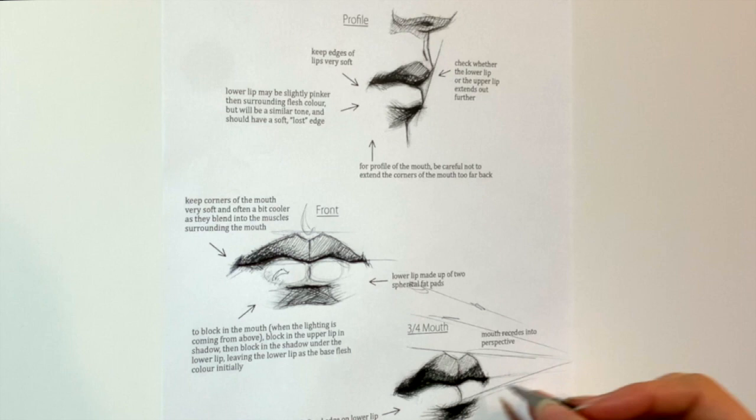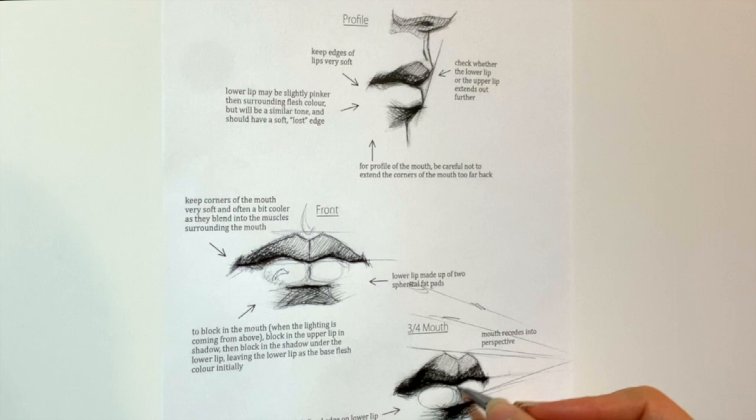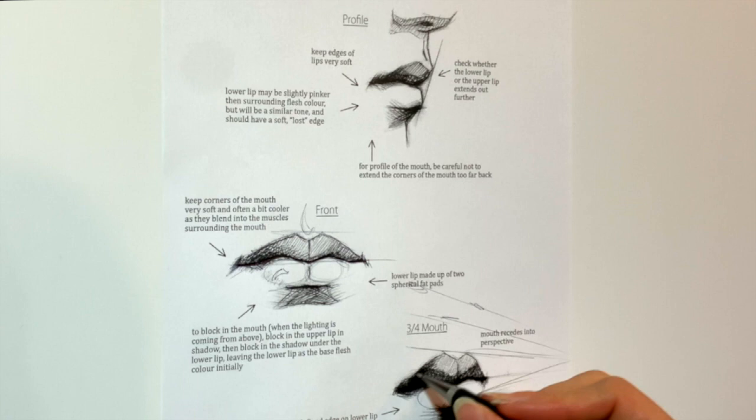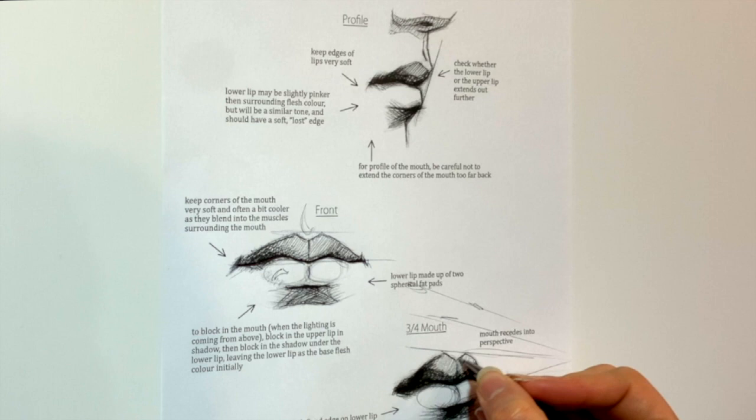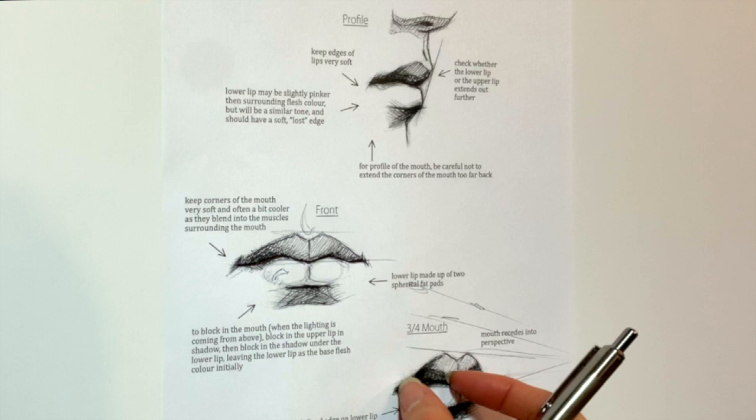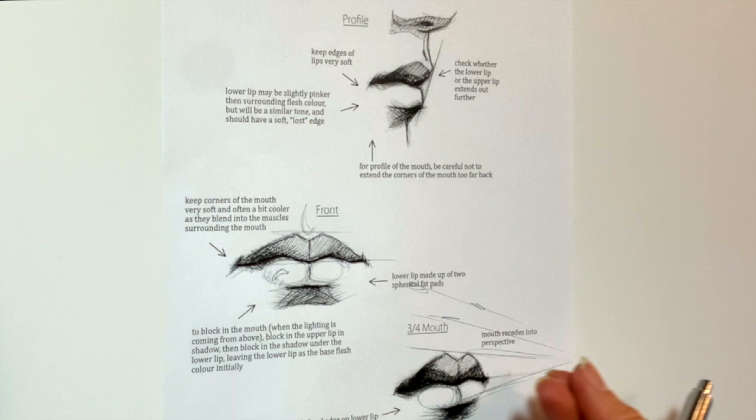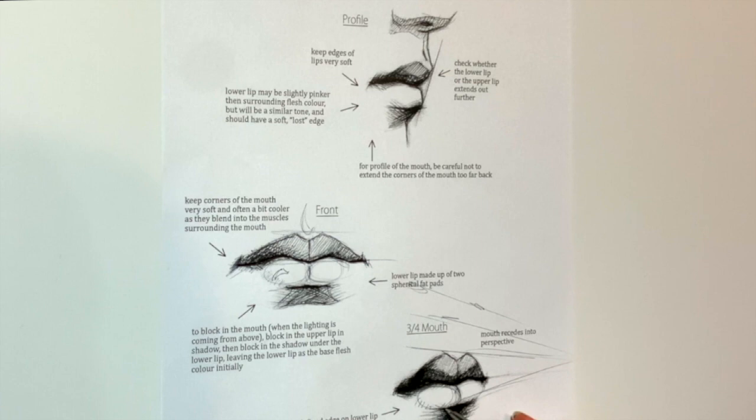The lower lip is constructed with two circular fat pads with the divot between the two. And then that curving, angled straight line to describe the wing of the upper lip. Cutting down and the curving, angled straight line to go back. Now the horizontal distances are getting less wide as you go back in space to get that receding into perspective. Again, no edge on the lower lip. Instead, the definition to the lower lip comes from the shadow underneath the lower lip.